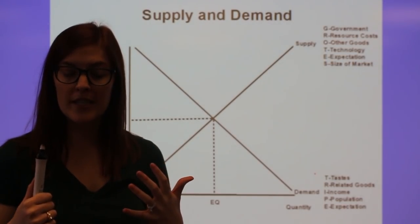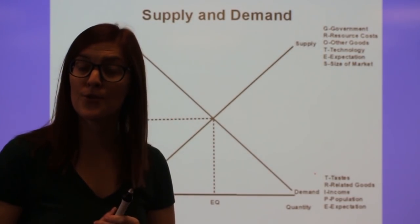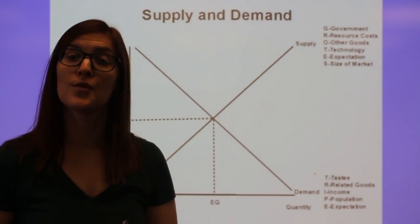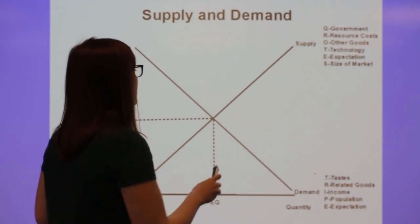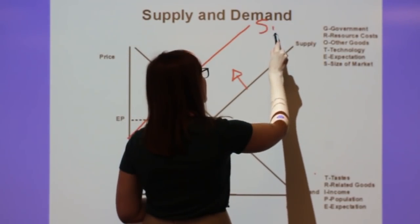And if wages increase, if I'm thinking of that as a resource cost for the producer, I would say the producer has less money. So the supply would decrease or move to the left. And I'll show you that right here.